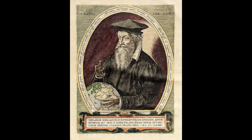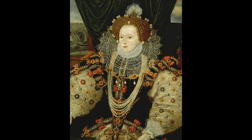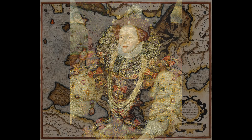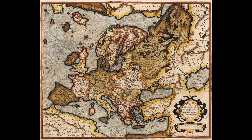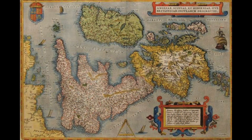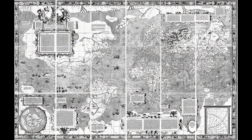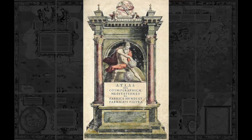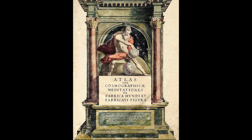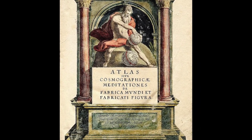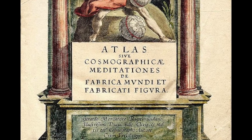Over the ensuing years, he continued to gather geographical data from his widespread network of collaborators, including his son, stationed in London, to provide Gerardus Elizabethan news of discoveries. He published a map of Europe in 1554, and one of Great Britain in 1564. In 1569 came his crowning achievement, his map of the world, titled 'A New and More Complete Representation of the Terrestrial Globe, Properly Adapted for Use in Navigation.' In later revisions, he would coin the term Atlas to describe his collection of maps, in honour of the Greek mythological figure Atlas, the first true geographer.